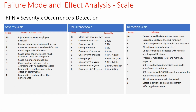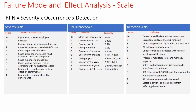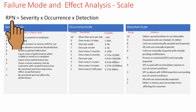Next is the detection scale. The detection scale is opposite to the occurrence and severity scales — the more detectable the defect, the lower the score. A detection rating of 10 is given when the defect caused by the failure is not detectable. A detection rating of 1 is given when the defect is obvious and can be kept from affecting the customer. The next key terminology is RPN, or Risk Priority Number, and the formula to calculate it is: Severity × Occurrence × Detection.